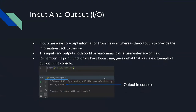Input and output — or IO as you'll often hear it called in the programming world — inputs are a way to accept information from the user, whereas output provides information back to the user. Both could be via the command line, user interfaces, or from files. The print function is a classic example of output in the console, and is the simplest form of output in Python.